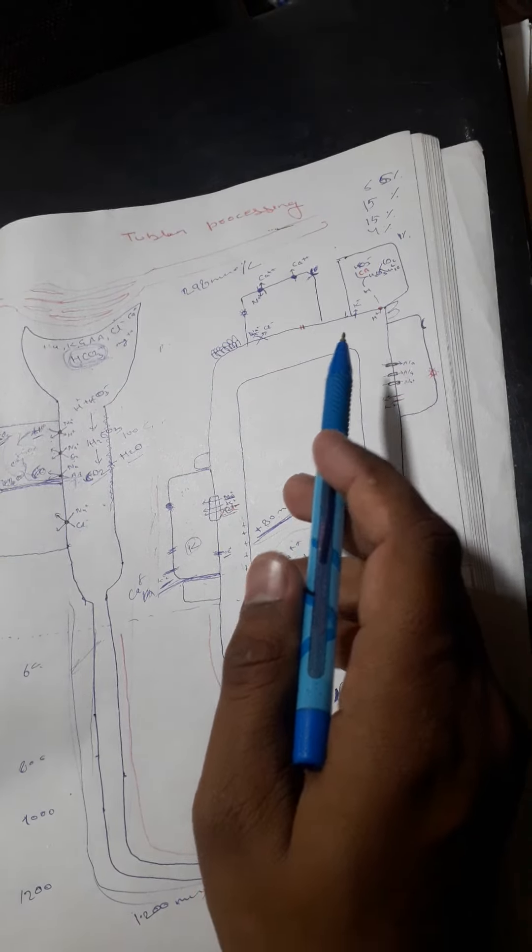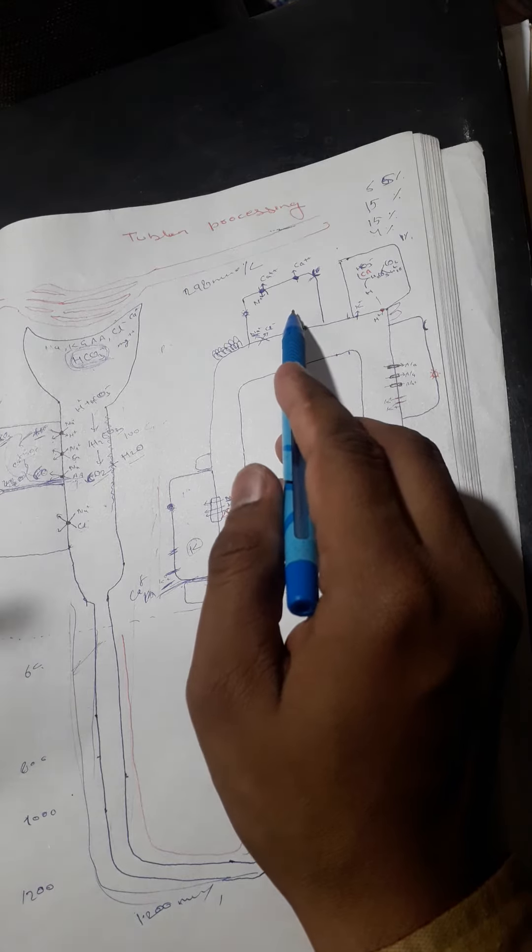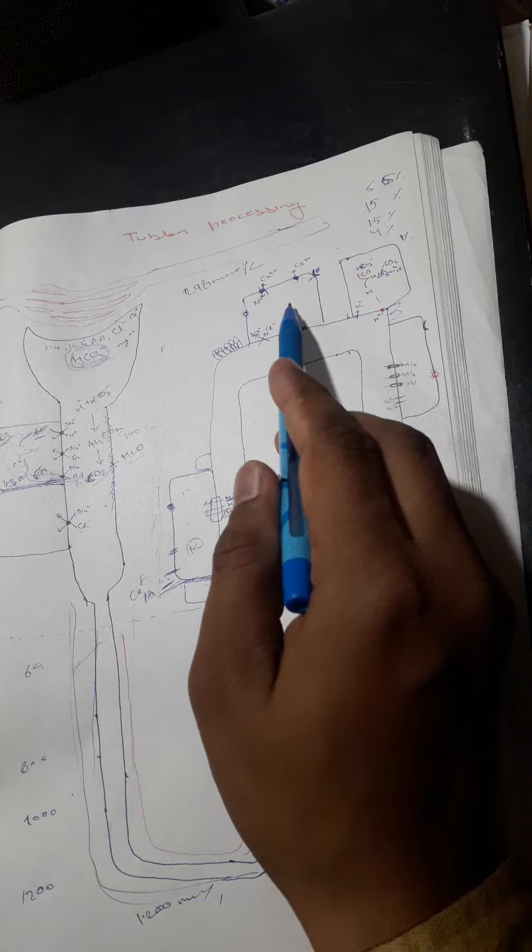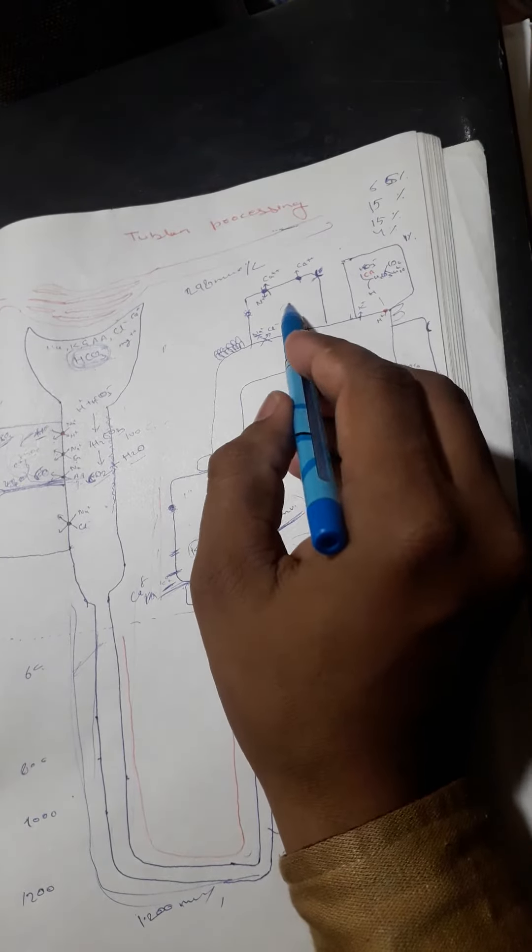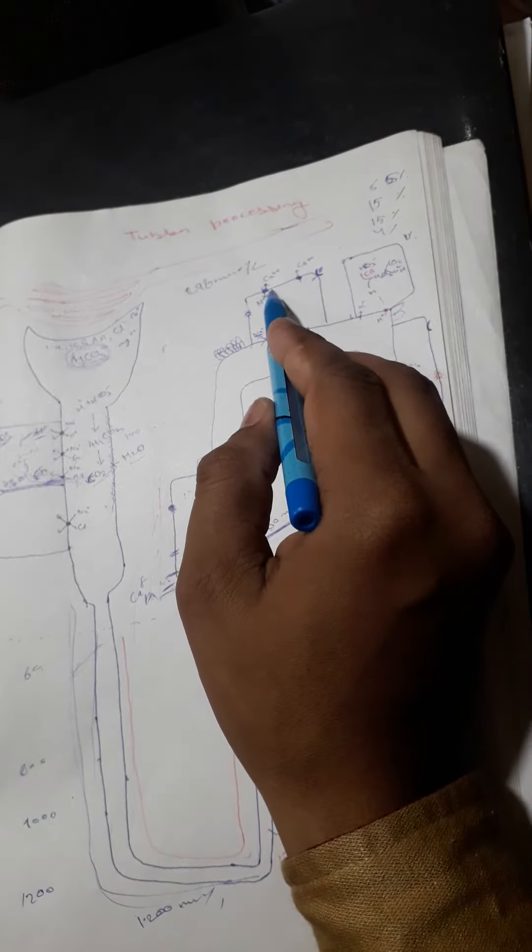Then protein kinase A activates and phosphorylates, breaking down ATP into ADP. Then inorganic phosphate is generated, and this inorganic phosphate goes to the calcium channel and binds here.